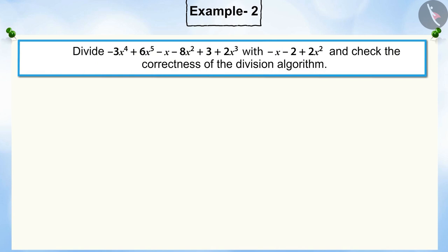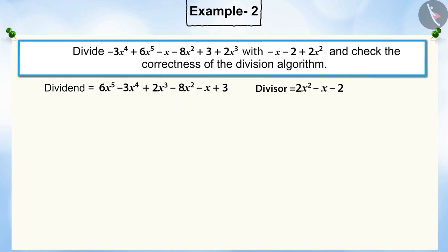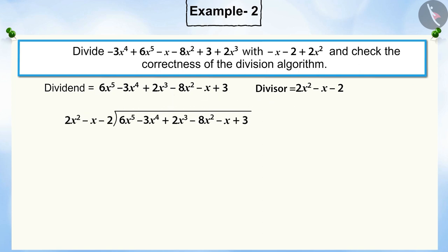In this question, we will divide the first polynomial by the second polynomial and check the correctness of the division algorithm. You can see that the given dividend and divisor are not in standard form. Before starting the division process, write the polynomials in their standard form, i.e., in decreasing order of powers. Now let's begin the division process.